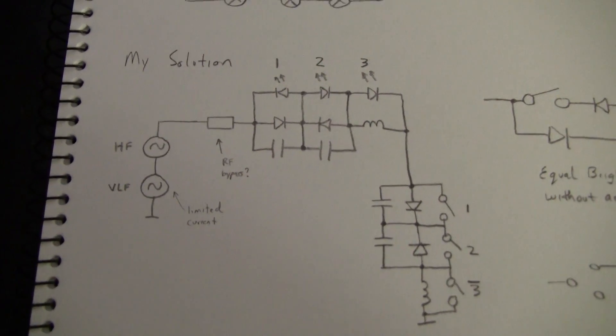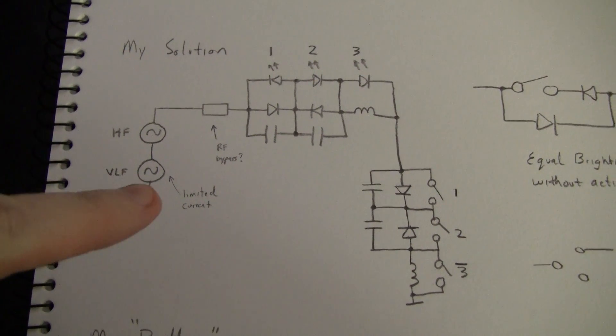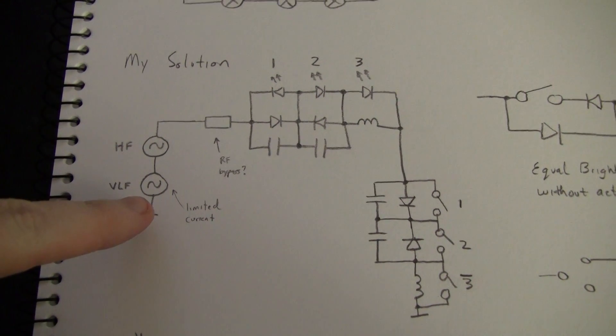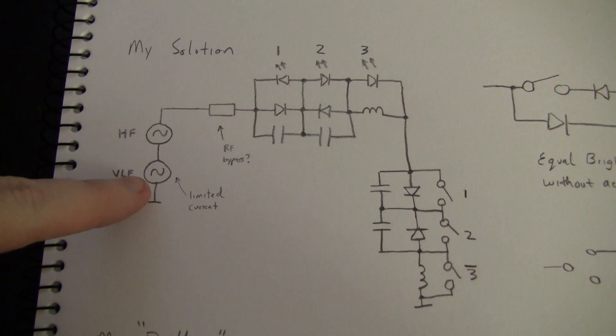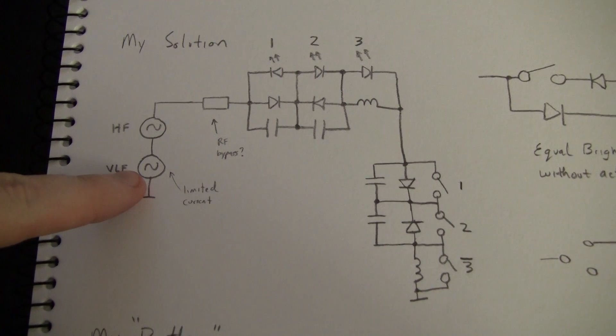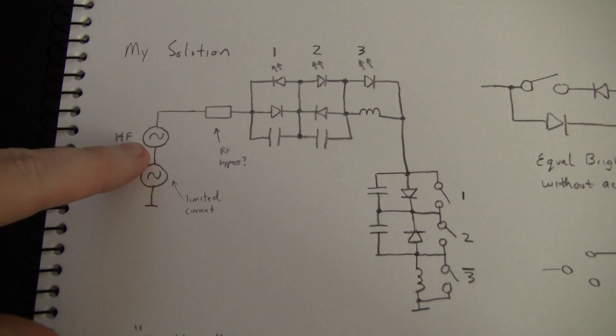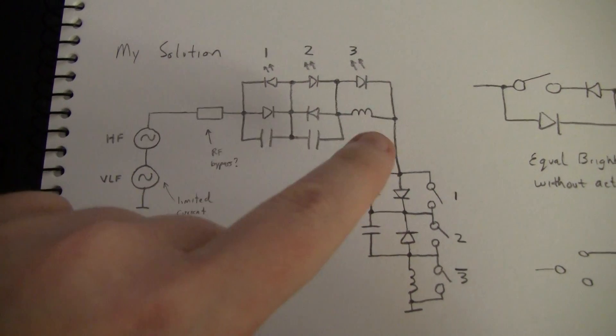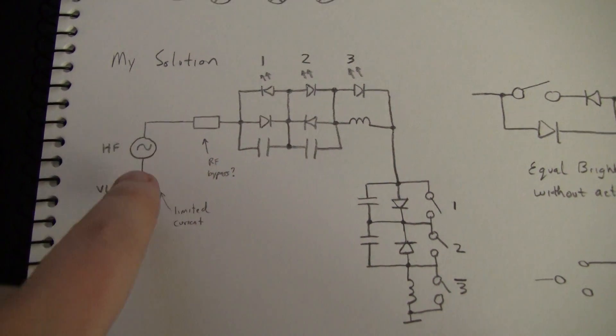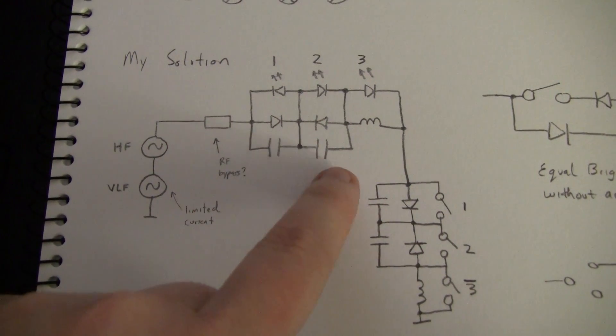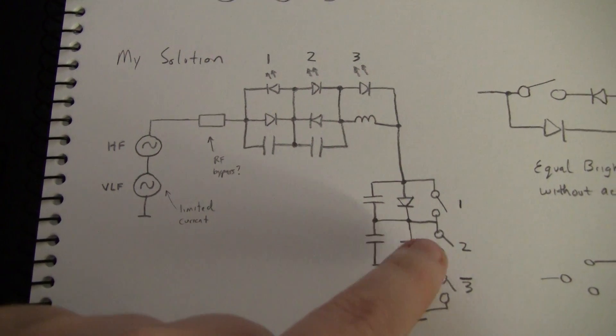So you've got two different sources of AC. One's at a fairly low frequency, just high enough that the human flicker fusion frequency is covered, and then you've got an RF source. The RF source is used for the third LED, so the first two operate pretty much as the old hack.